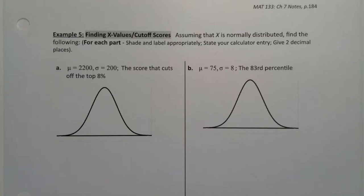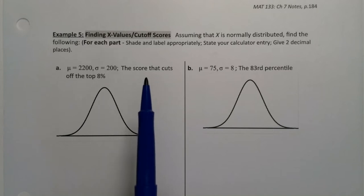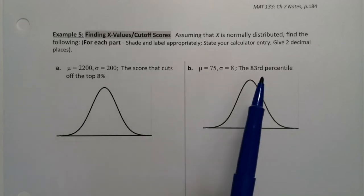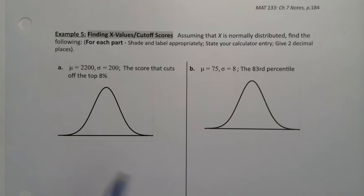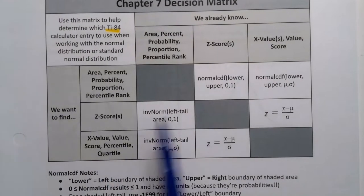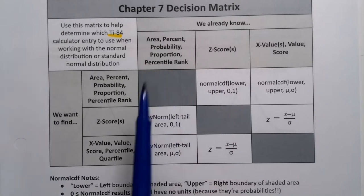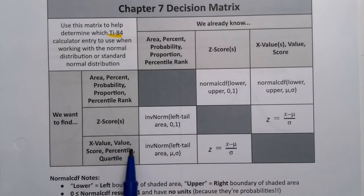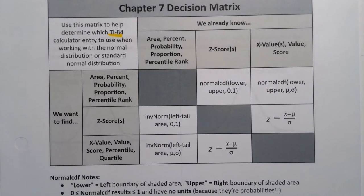Well, we knew this was coming. What if we want to go the other way and we want to find scores or x values or percentiles? Well, that will mean that we're going to be using inverse norm. So right here, if you already know an area and you want to find an x value or percentile, we're going to be using inverse norm, left tail area, comma, mu, comma, sigma.